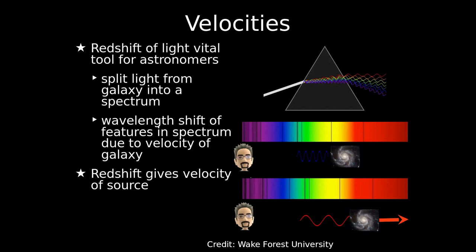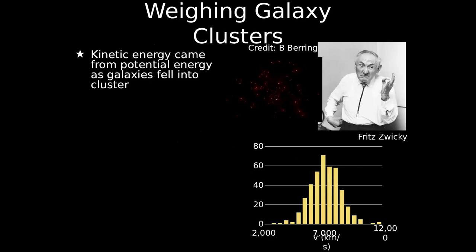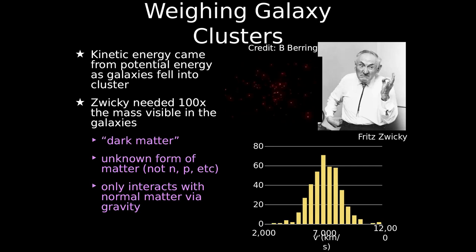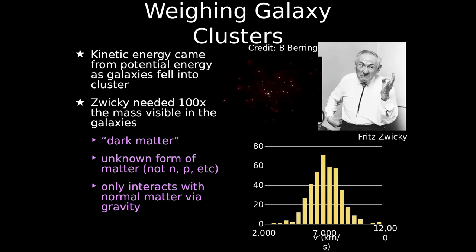This is what Zwicky did. He measured the galaxy velocities of galaxies within groups — the ones moving away from us at a given moment have faster velocities, the ones moving towards us have slower velocities. Assuming all this velocity comes from kinetic energy from the galaxies falling in — from the potential energy, which is all from mass — what he found was that the galaxy group was actually 100 times heavier than just from the galaxies. There's something there we can't see. This is coined dark matter. We call it dark matter because we can't see it at any wavelength; the only reason we know it's there is because of gravity.